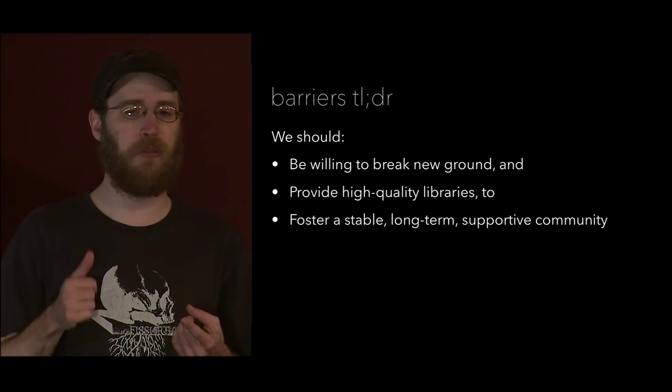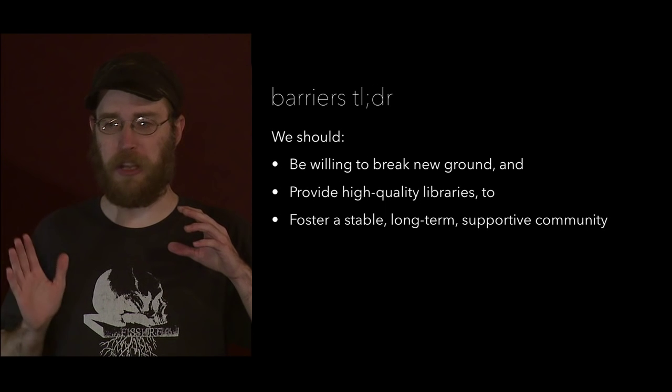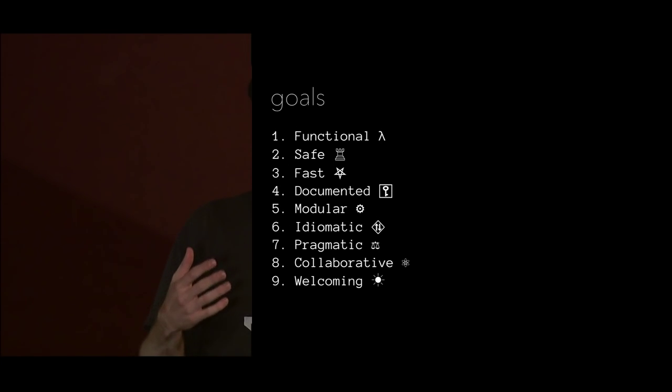The TLDR: we should be willing to break new ground and provide high-quality libraries to foster a stable, long-term, supportive community. There are a lot of really interesting technical challenges — we should dig our teeth into them while minimizing the drag for new people and helping them come up to speed. Now let's dive into my nine goals. For open interfaces, we should just use type classes — always. If you want someone else to be able to extend your library, provide a type class interface, not a class they extend.